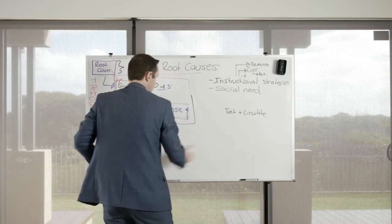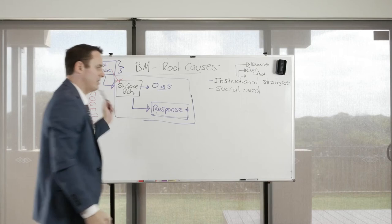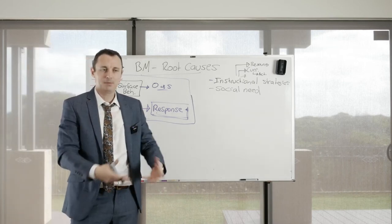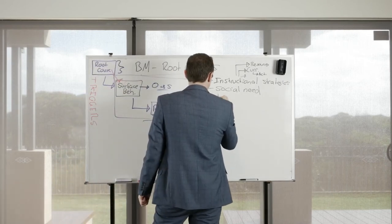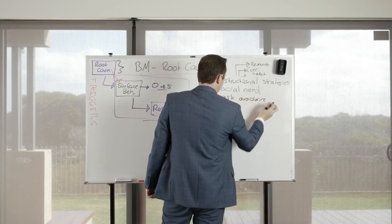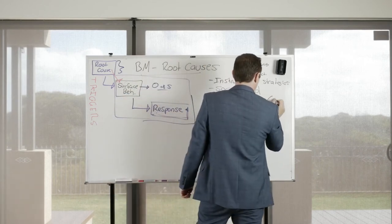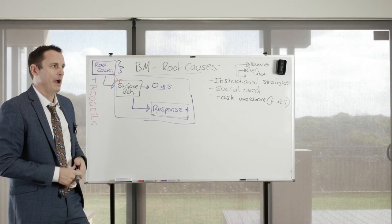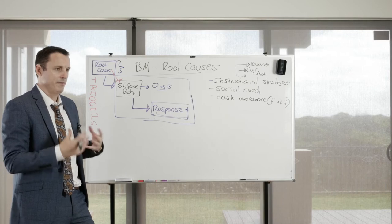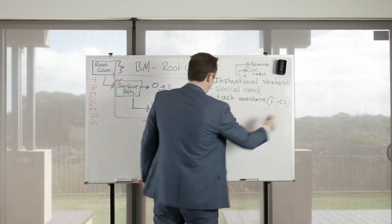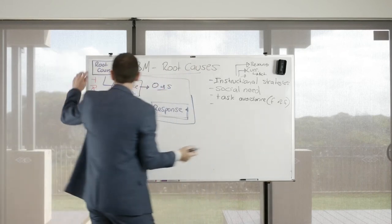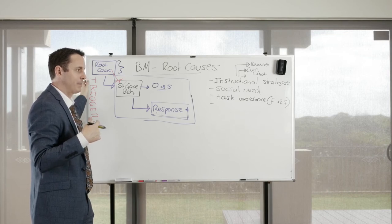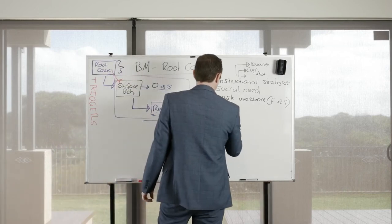Another root cause is task avoidance — specifically fear of failure and fear of loss of face, meaning embarrassment in front of peers. Task avoidance is often caused by fear of failure, expectation of failure, or frustration. Lack of motivation is another root cause, usually attributable to all of these. Kids are motivated — they just might not be motivated to do what you want them to do.